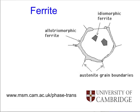The word allotriomorph means that the shape of the transformation product does not reflect its internal crystalline symmetry. The reason is that this ferrite nucleates at the austenite grain boundaries, which provides an easy diffusion path, so it grows along those austenite grain boundaries and forms a layer rather than forming crystallographic facets.